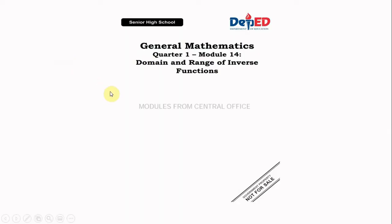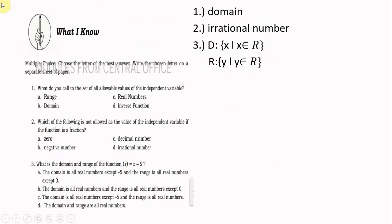This is General Mathematics Quarter 1, Module 14: Domain and Range of Inverse Functions. Before we proceed, don't forget to like, share, and subscribe to my channel. Number one: what do you call the set of all allowable values of the independent variable? The answer is domain.